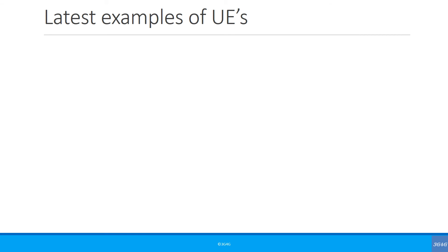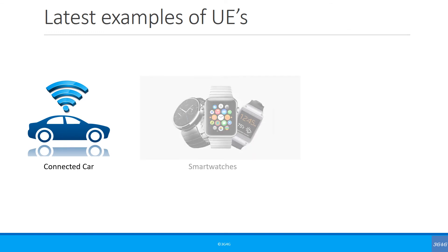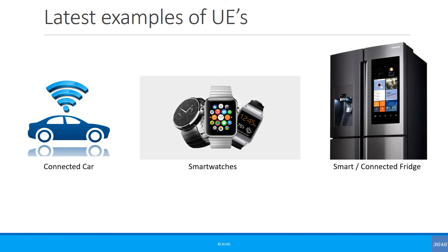We have a number of new categories of UEs being introduced now. For example, connected cars, smart watches, smart appliances, and even VR and AR headsets. Any of these gadgets, if they have a SIM to connect to the mobile network, they will be referred to as UE.